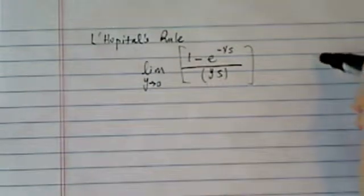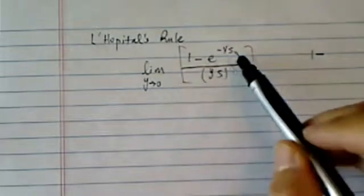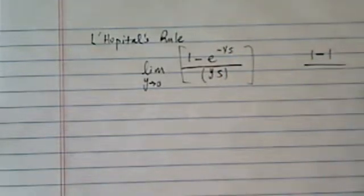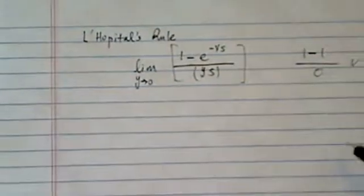So let's check if it's 0 over 0 first. 1 minus e to the 0, then it's e to the 0 which is 1, so on top we have 0, on the bottom we have 0. So yes, we do have 0 over 0 case.